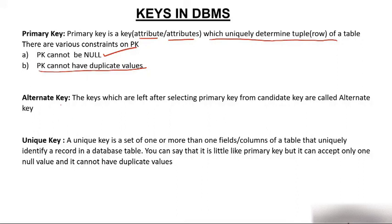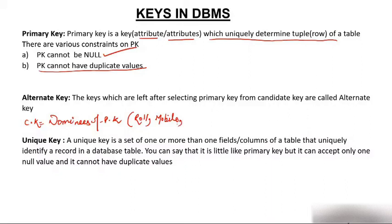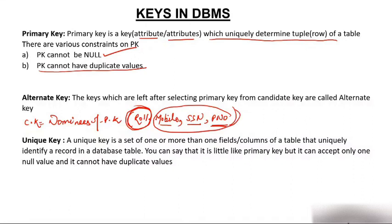Now comes alternate key. The second definition of candidate key: nominees of primary key — those attributes which have the capability to become primary key are called candidate keys. Examples: roll number, mobile number, SSN (social security number), passport number — all are candidate keys because they all have the quality to become primary key. Alternate key: suppose I selected roll number as primary key from the four candidate keys. All the remaining candidates will act as alternate keys. Keys left after selecting the primary key from candidate keys are called alternate keys.